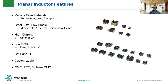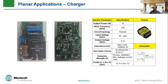Speaking of inductors, here are some benefits planar offers to inductors. The pictures on the bottom right are actually transformers. Core materials can be chosen as performance requires — performance versus cost — and these can be very small. They can carry up to 150 amps and have DCR as low as 0.2 milliohms. Here's an example of our planar transformer in a charger — it's about one inch by two inches, a 15-watt charger.